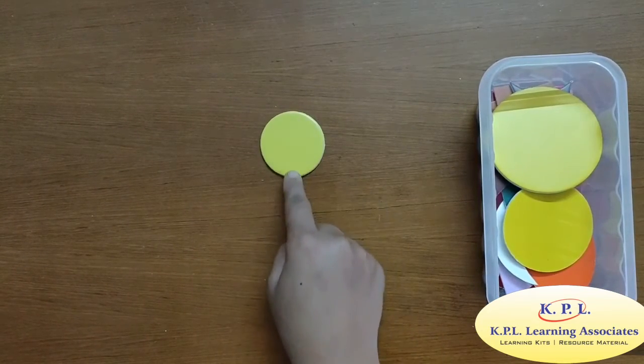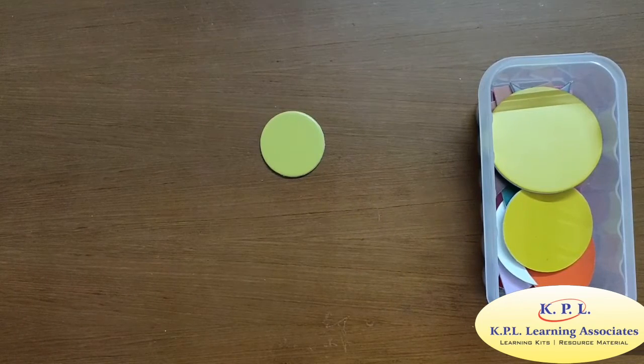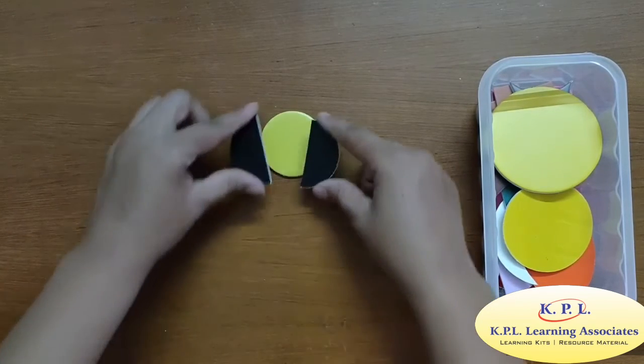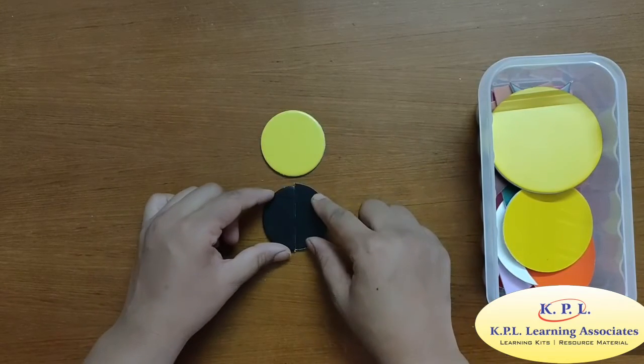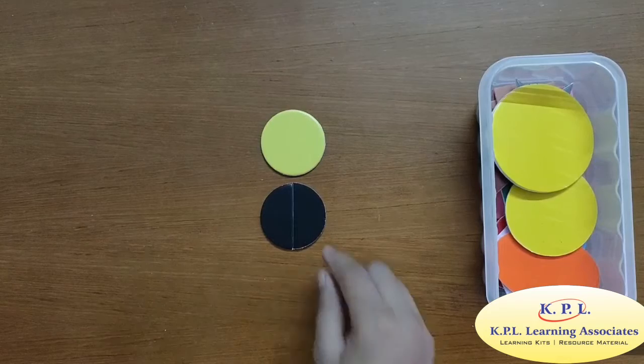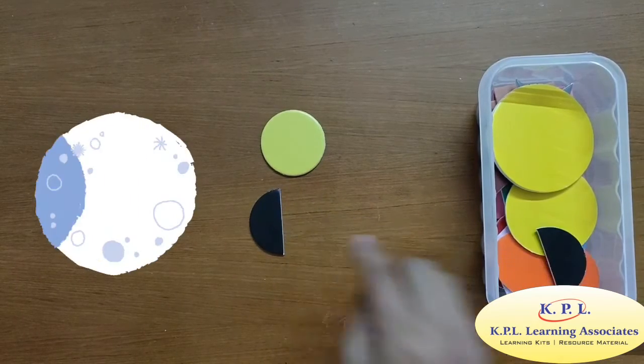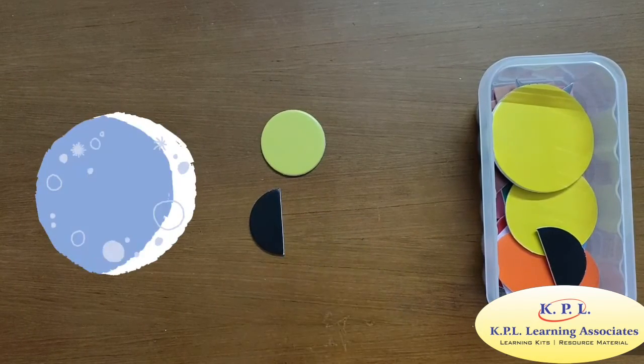If we cut the circle in two parts, we get two semi-circles. Like this, two semi-circles. If we further cut it, it is crescent, moon shape.